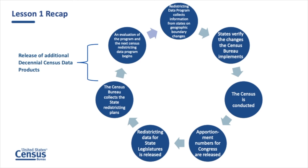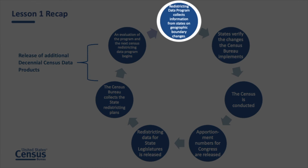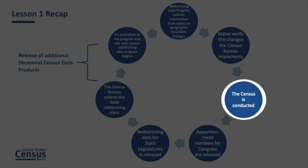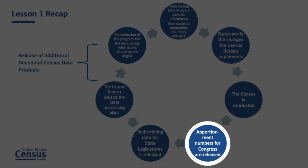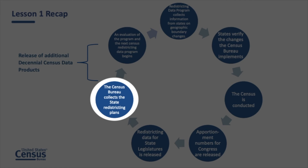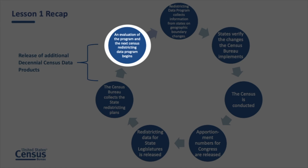Here's what you've learned so far. The Redistricting Data Program collects information from the states in order to define and update geographic boundaries for redistricting purposes. Participating states have the opportunity to review the changes made. The Census is then conducted. The Census Bureau delivers the apportionment counts to the president, which are used to apportion the 435 congressional district seats in the House of Representatives. Next, the Census Bureau provides the PL 94-171 redistricting data tabulations to the states, after which the Census Bureau collects the state redistricting plans and begins to evaluate and plan for the future.